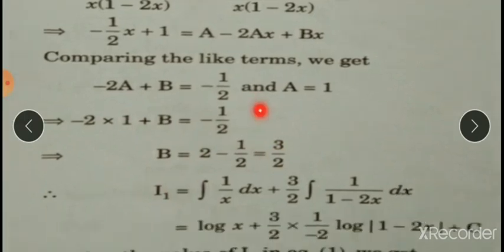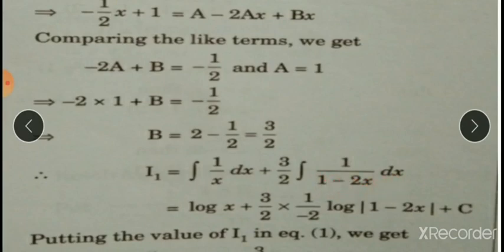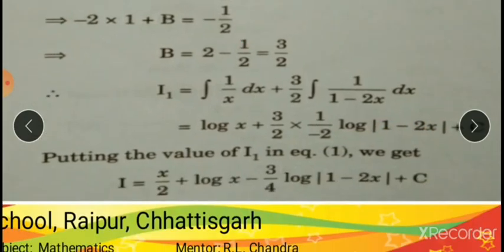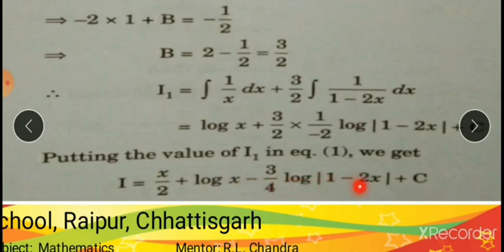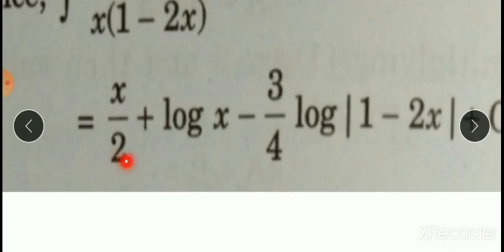So I₁ = integration of 1/x plus (3/2) integration of 1/(1-2x). Integration of 1/x is log x. For 1/(1-2x), using substitution (let 1-2x = t), its integration is -1/2 log|1-2x|. So I₁ = log|x| + (3/2)(-1/2)log|1-2x| + C. Substituting I₁ back, the complete integration I = x/2 + log|x| - (3/4)log|1-2x| plus arbitrary constant.